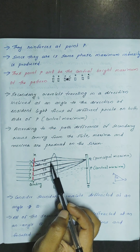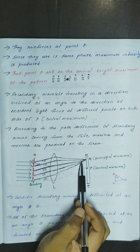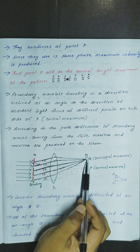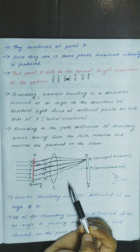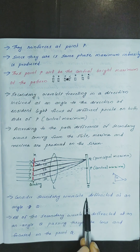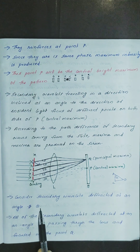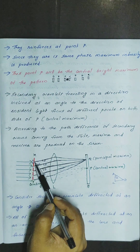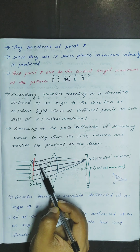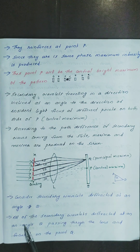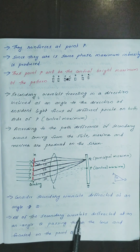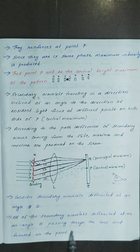The brightness is maxima. Consider secondary wavelets diffracted at an angle theta. All of these secondary wavelets diffracted at an angle theta pass through the lens and are focused on the point Q.